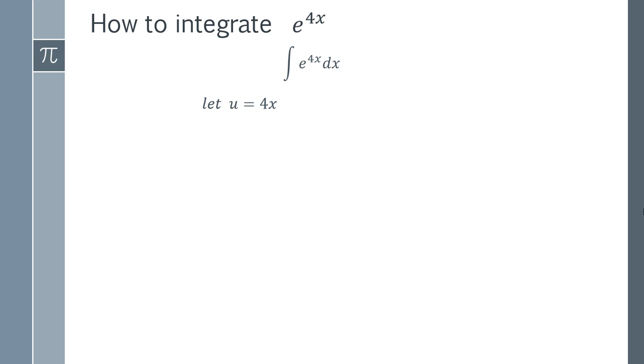But we have another problem in that we have dx. You can't do the integral of e to the u dx. We have to change that dx to something with a du in it. So what we do is we find the derivative of u. So we get du dx equals 4.